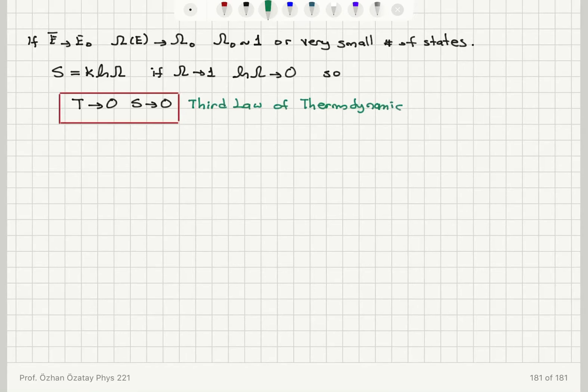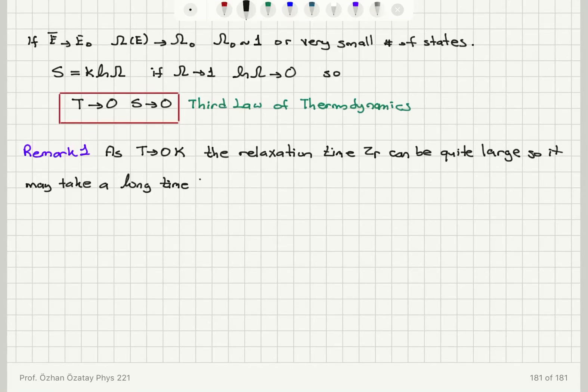So this is known as the third law of thermodynamics. So it has to do with the temperature dependence of entropy. Now I want to give two remarks here. The first remark is that if you have the temperature approaching the absolute zero Kelvin, the relaxation time to reach equilibrium, relaxation time tau sub r can be quite large. So it may take a very long time to reach thermal equilibrium.